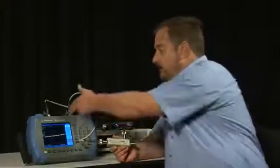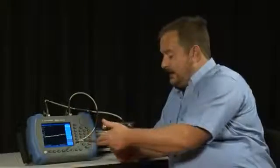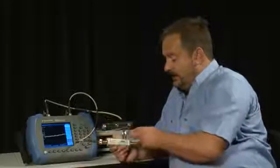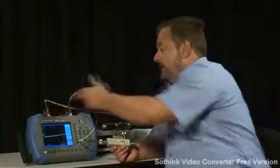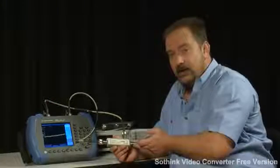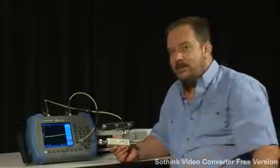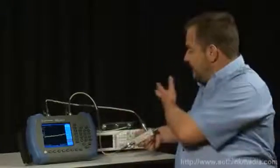So the signal from the tracking generator is connected to the input of the bridge. The reflected output of the bridge is connected to the input of the spectrum analyzer. And the third port on the bridge is going to be connected to the device under test. In this case, I will measure the same device we used previously, the diplexer, or filter, that I used in the last demonstration.